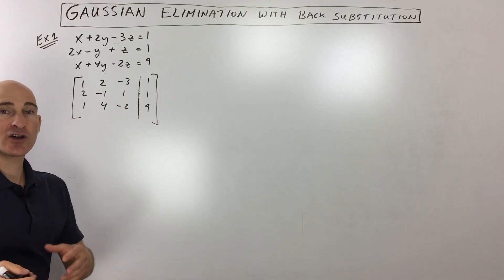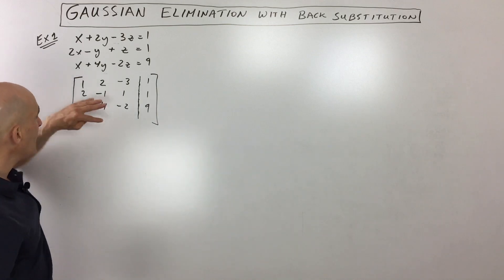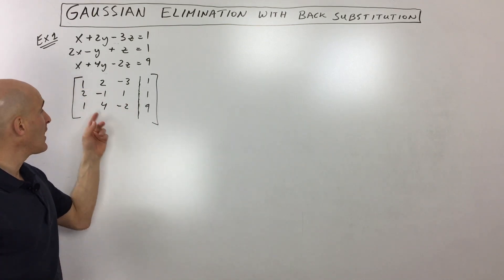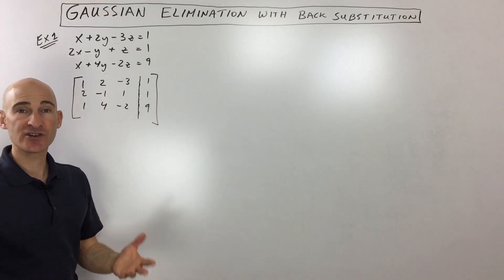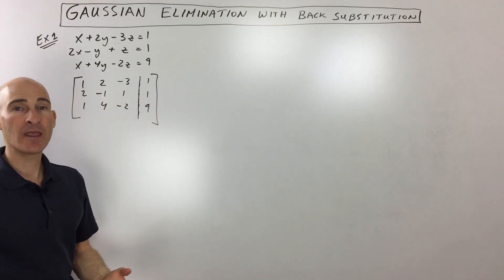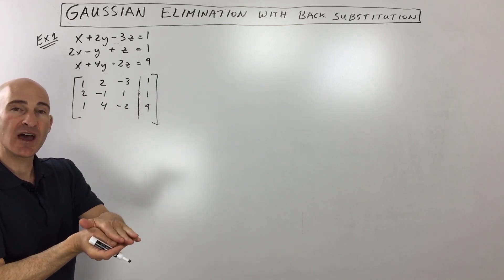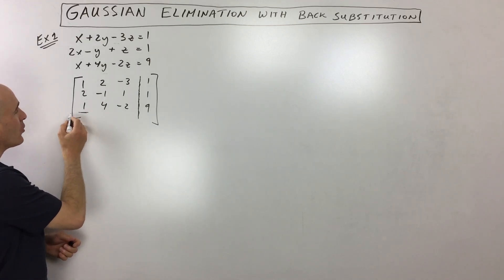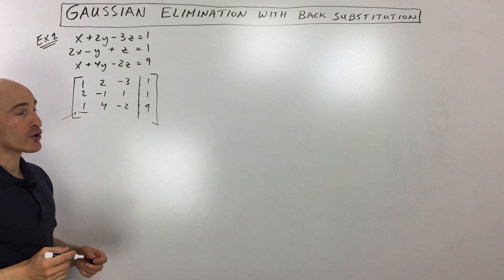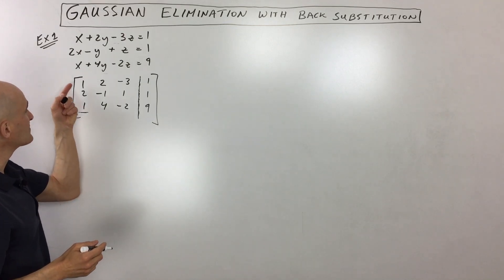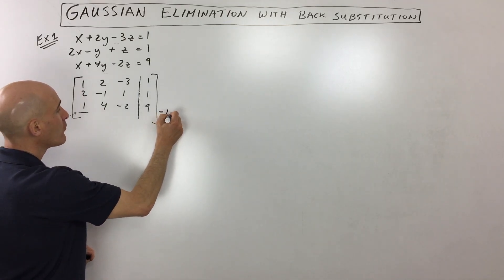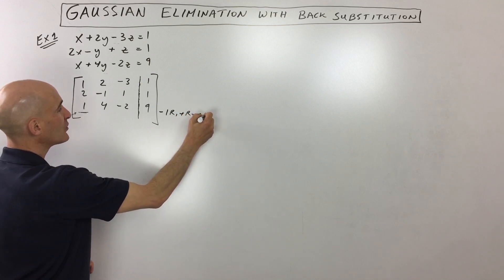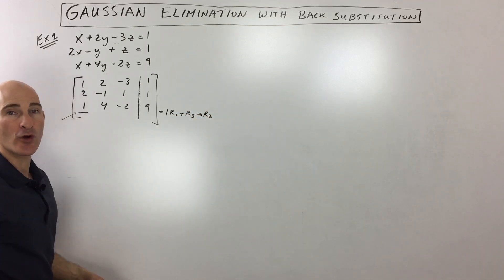The way that Gaussian elimination works is that you can interchange any two rows, you can multiply any row by a constant as long as it's not zero, and you can add any two rows together. Our first step is to get zero in the lower left-hand corner. I'm going to multiply the first row by negative one, add it to the third row, and put the answer in the third row.